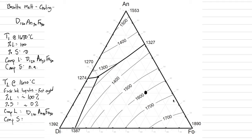If we pull forsterite 100 out of the melt, we have to push the melt away from this apex. So what we're going to do is draw our tie lines. We're going to draw a straight line — use a ruler, that's going to be the most important line you draw on this diagram — perfectly straight, connecting from the forsterite apex, going through our composition point, and hitting the cotectic. But at this point we're still sitting at that dot; we haven't moved at all in this direction.